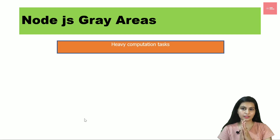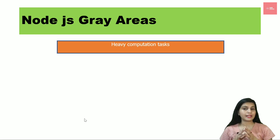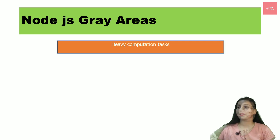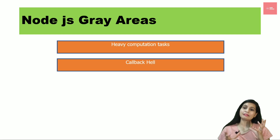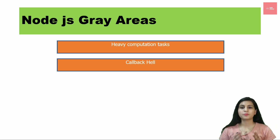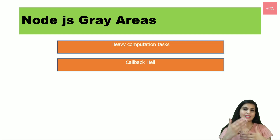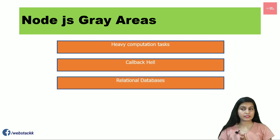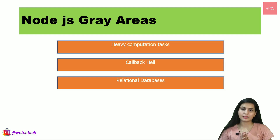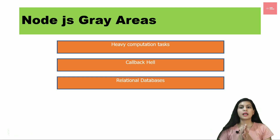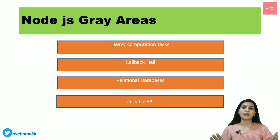Let's look at some gray areas. Node.js does not work well with heavy computation tasks — if a lot of calculations are required, you should avoid it. Callback hell is another issue: asynchronous programming leads to deeply nested callbacks, which becomes very difficult to manage. Node.js also doesn't work well with relational databases; it works much better with NoSQL databases like MongoDB. Finally, Node.js has unstable APIs that keep changing, requiring frequent updates.